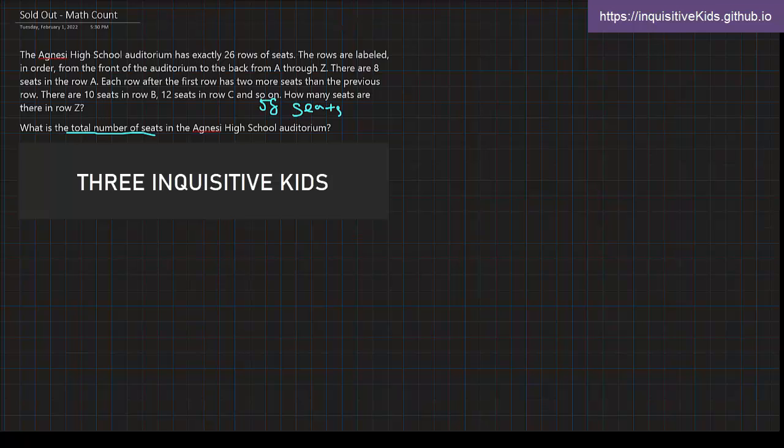So, first, I'm going to write the equation down, of course. So, with row A's, that's 10 plus 12 plus, sorry, missed 8 plus 10, plus 12 plus, and so on, until we have 56. That's row Y. 58.